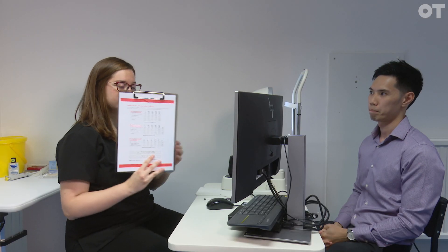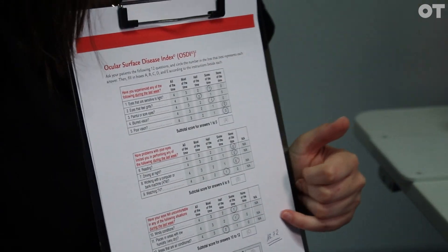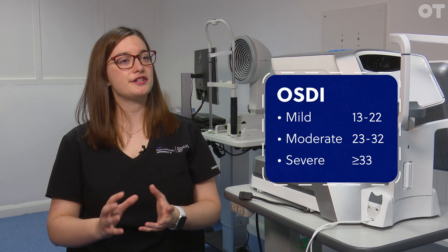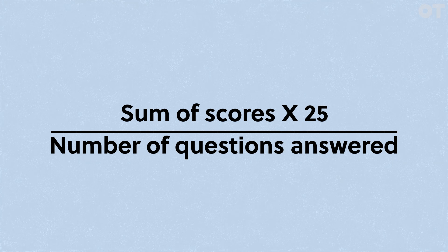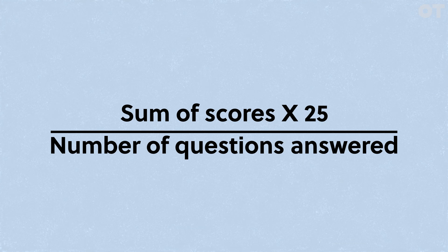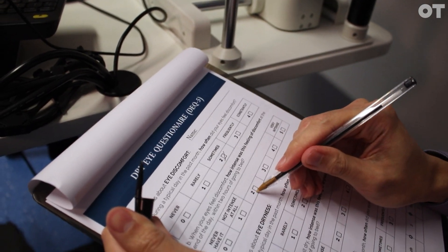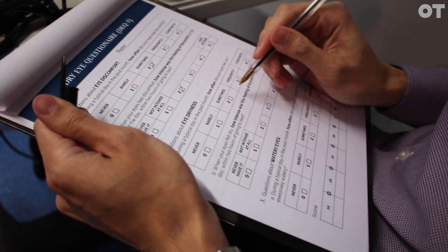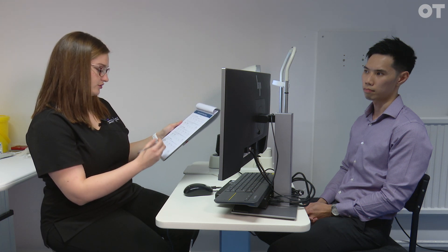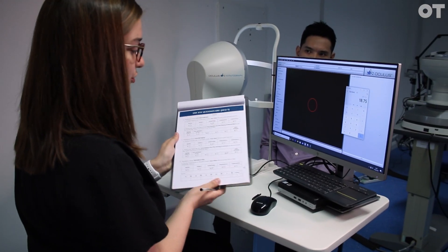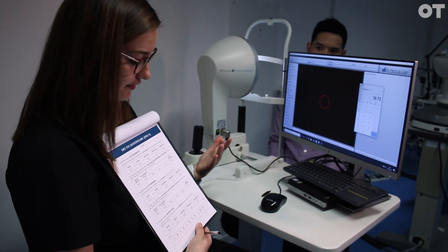For the OSDI, mild is from 13 to 22, moderate from 23 to 30, and severe is 30 and above. To calculate it, we add the values the patient has indicated, multiply by 25, and divide by the number of questions answered. For the DEQ5, the scoring goes 2, 4, 6, 10, 12, and anything more than 6 is positive for dry eye.